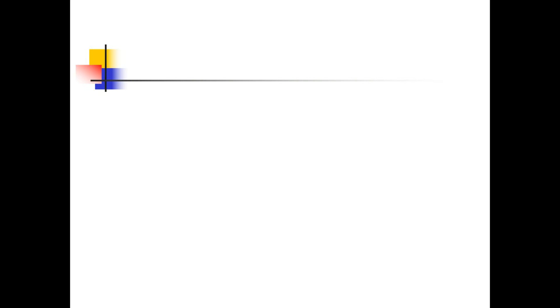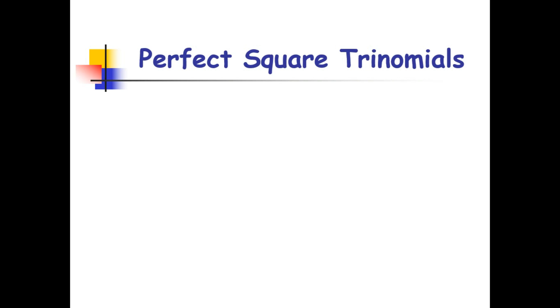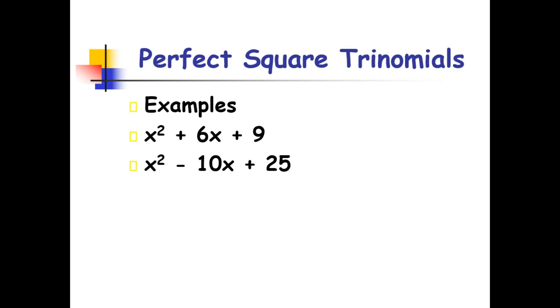Before we discuss how to solve quadratic equations using completing the square, we need to have an idea first about perfect square trinomials. What is a perfect square trinomial? Let's consider these given examples. We have x squared plus 6x plus 9, x squared minus 10x plus 25, and x squared plus 12x plus 36. Why are these examples considered to be a perfect square trinomial?